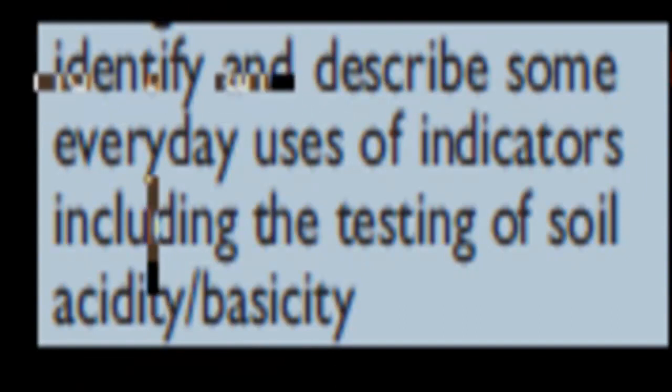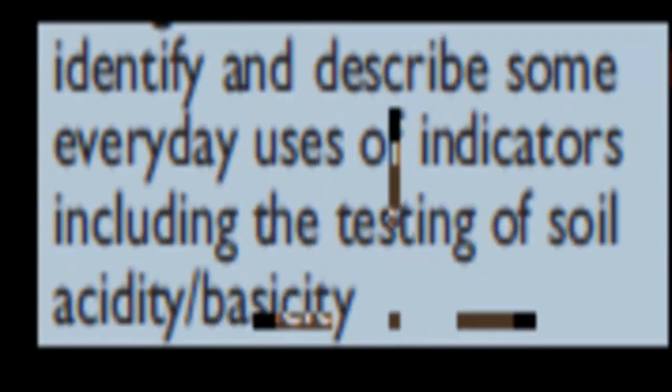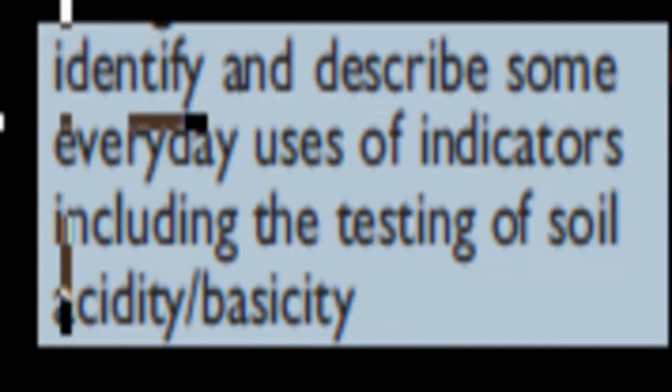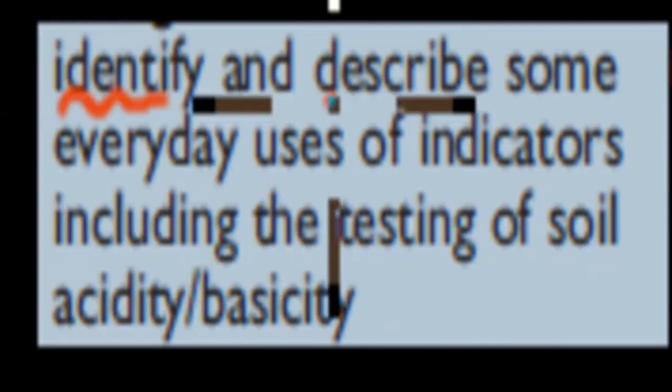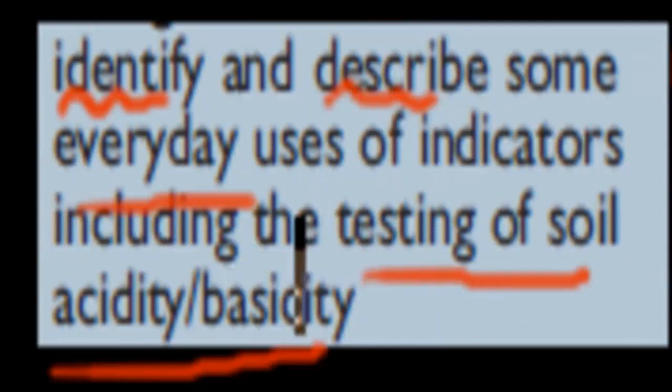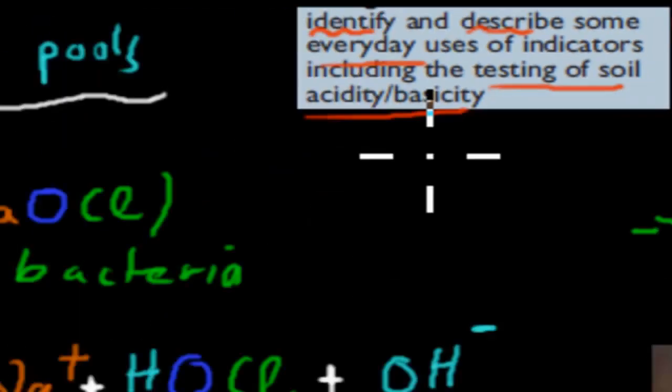So the dot point itself says identify and describe some everyday uses of indicators including the testing of soil acidity and basicity. So we have to identify and describe some everyday uses and we have to definitely cover the example of testing soils for acidity and basicity. So we're going to cover four examples, two in greater detail and two just quickly mentioning them.